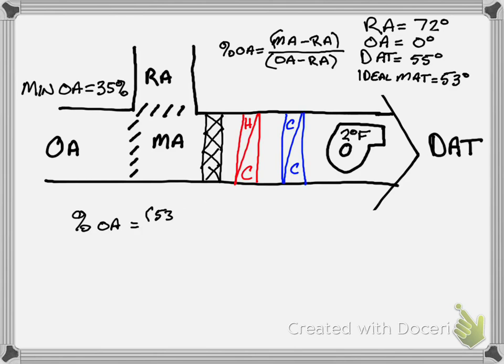And so we have to then just as we did before solve a new equation. We want to say that our 35% is our minimum outside air. And we're going to say our mixed air temperature is our unknown minus 72 over 0 minus 72.